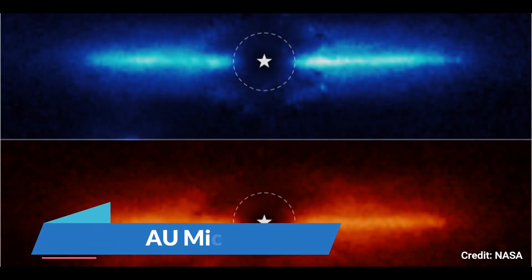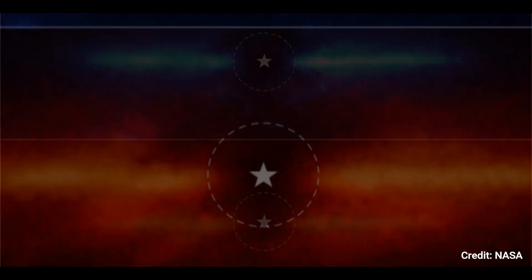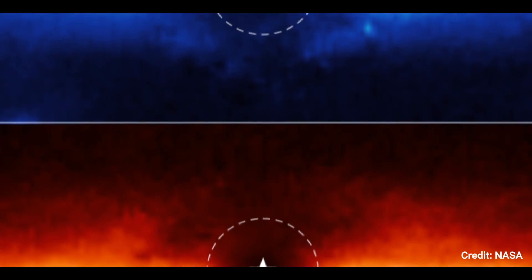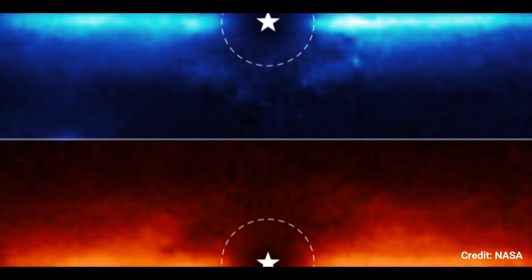Number 2. AU Microscopii. The dusty debris disk around AU Microscopii, a red dwarf star 32 light-years away in the southern constellation Microscopium, is depicted in these two photos. AU Microscopii was studied using Webb's near-infrared camera.